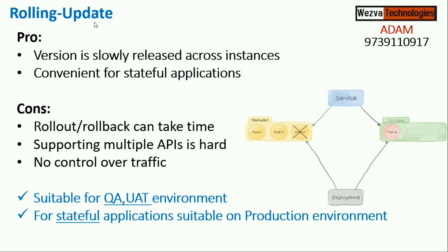The disadvantage is that rolling update is time consuming. If you have 100 replicas to replace, you have to wait for them to be replaced one by one. Similarly, rolling back is also one by one — it has to create one new replica equivalent to the old image and then delete the new one. So rolling back will also happen one by one, which may not be suitable in many cases.